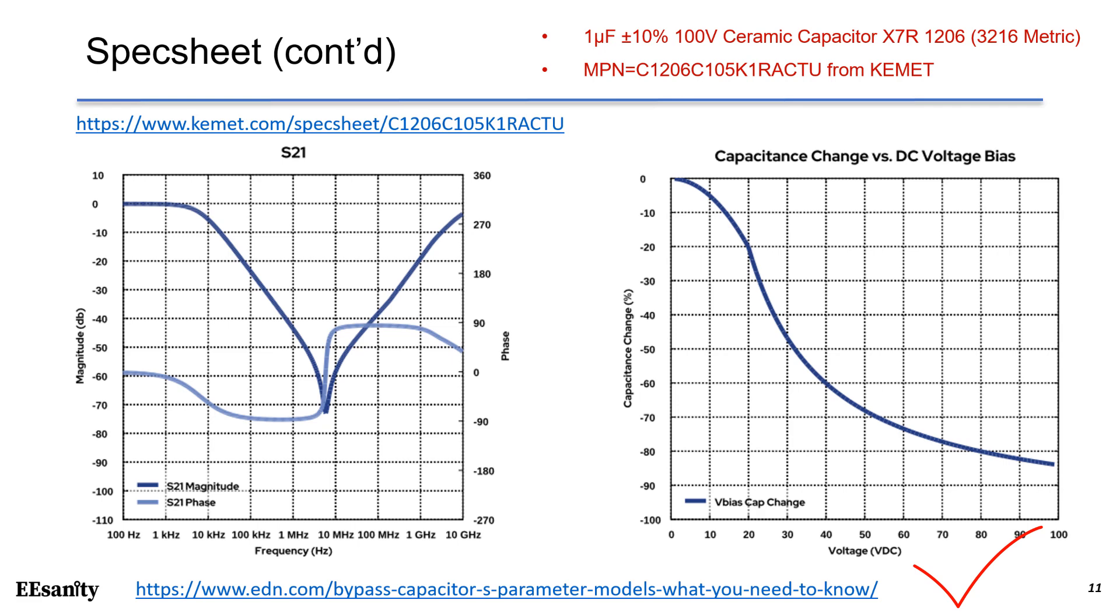On the Y axis, we can see the capacitance change, which is a negative number in percentage. The X axis is the applied voltage in DC. Basically, when you increase the applied voltage in DC, the effective capacitance drops. For example, at 20V, the capacitance drop is 20%. That means only 0.8 microfarads left as the effective capacitance at 20V DC. This is the major disadvantage of ceramic capacitance.